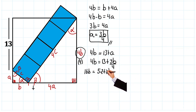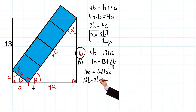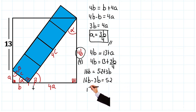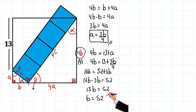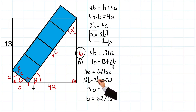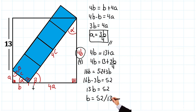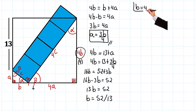We move this 3b to the left side: 16b minus 3b equals 52. That gives us 13b equals 52. Dividing both sides by 13, b is equal to 52 divided by 13 — and since 13 times 4 is 52, b equals 4. Fantastic, we have already obtained one of the values of this triangle.